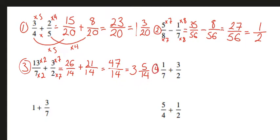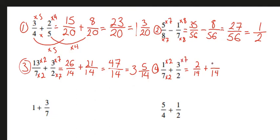Number 4, we have 1 over 7 plus 3 over 2. We're going to have the same least common denominator of 14 here, which is just 7 times 2. To get from 7 to 14, we're multiplying by 2. And what we do to the bottom, we also do to the top — this numerator is going to be 2. To get from 2 to 14, it's times 7, so we need to do 3 times 7, which will be 21.